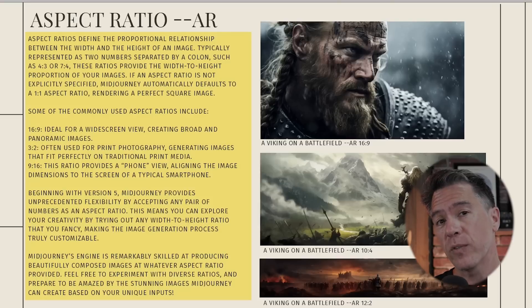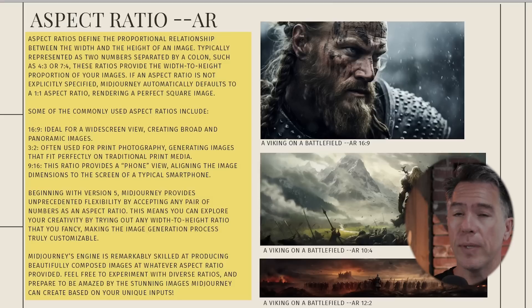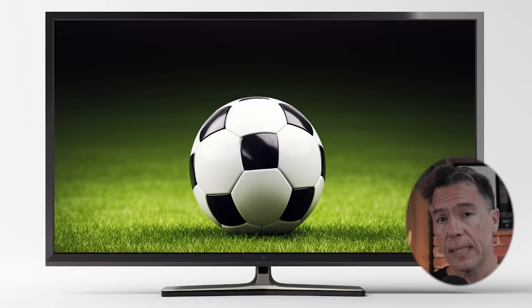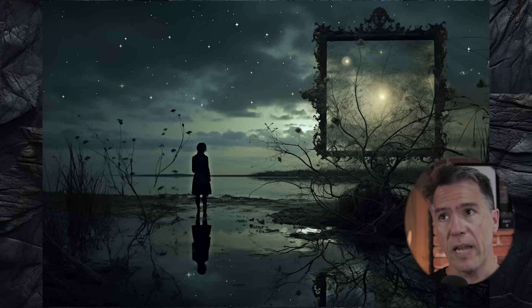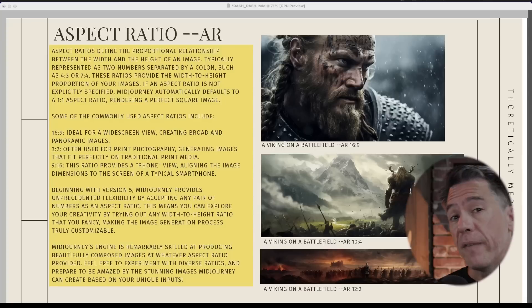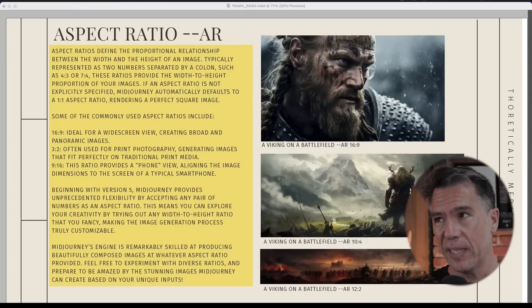Kicking off with aspect ratios, which arguably has the largest effect on your overall image — you issue this command with --ar. Aspect ratios define the proportional relationship of the width to height of your image. For example, 16:9 is the shape of most of our TVs, 3:4 is a fairly common photographic aspect ratio, and 9:16 is the aspect ratio for everyone's favorite black mirror. But ever since version five, we've had the ability to use whatever aspect ratio we want, which is actually super cool.